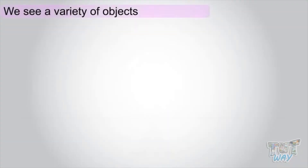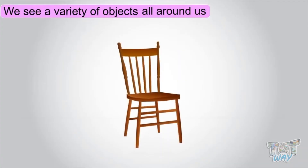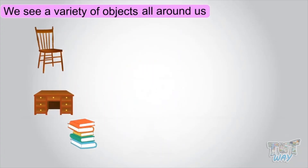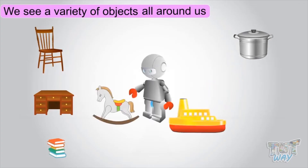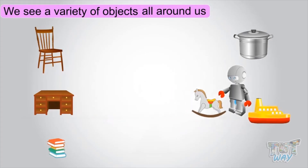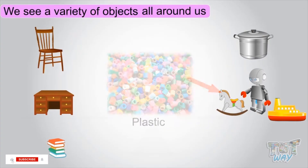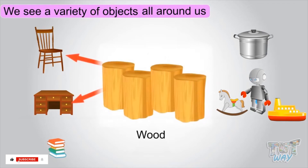We see a variety of objects all around us, like a chair, table, book, utensils, and so many toys. They all are made up of different materials, like plastic, wood, steel, and mud.